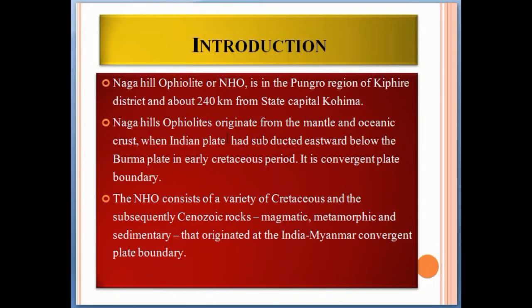Naga Hill Ophiolites originate from the mantle and oceanic crust when the Indian plate had subducted eastward below the Burma plate in the early Cretaceous period. It is actually a convergent plate boundary. The NHO consists of a variety of Cretaceous and subsequently Cenozoic rocks — magmatic, metamorphic, and sedimentary — that originated at the India-Myanmar convergent plate boundary.